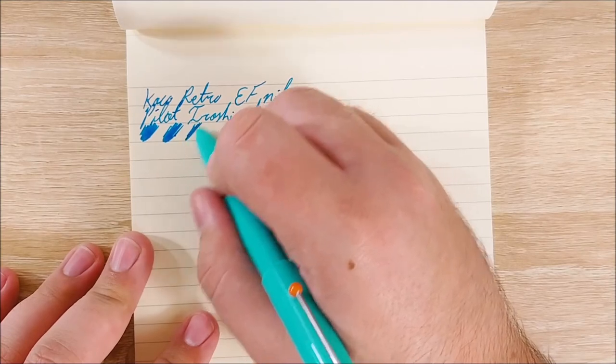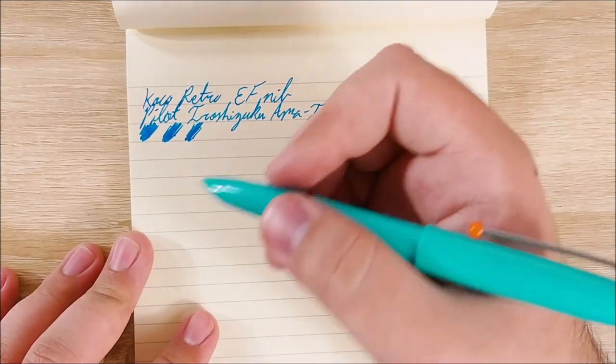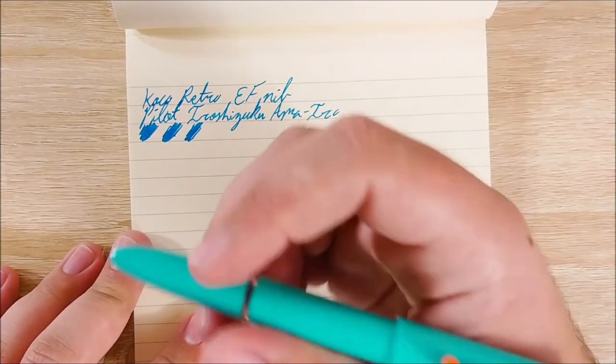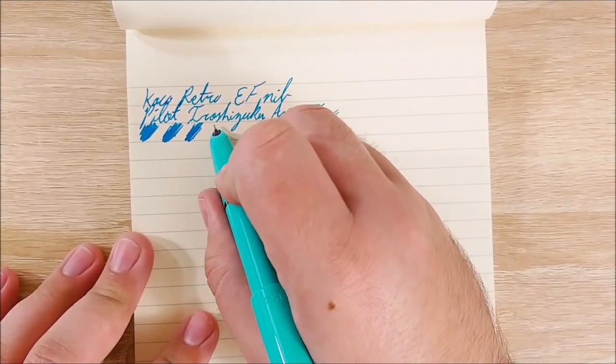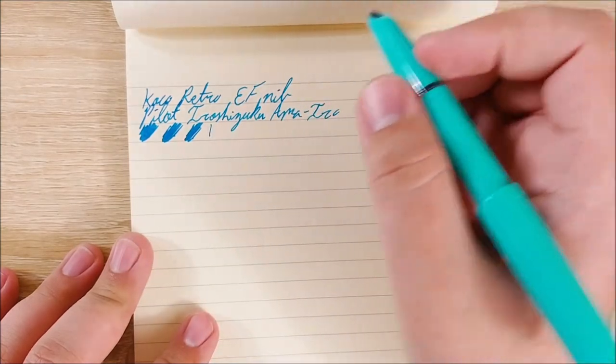But it's a very, very nice nib. The flow is nice and wet. I will say it's a hooded nib. There's no flex. It's a steel nib. There's definitely no flex. So don't expect any of that. But I'll show you what alignments and pressure looks like.